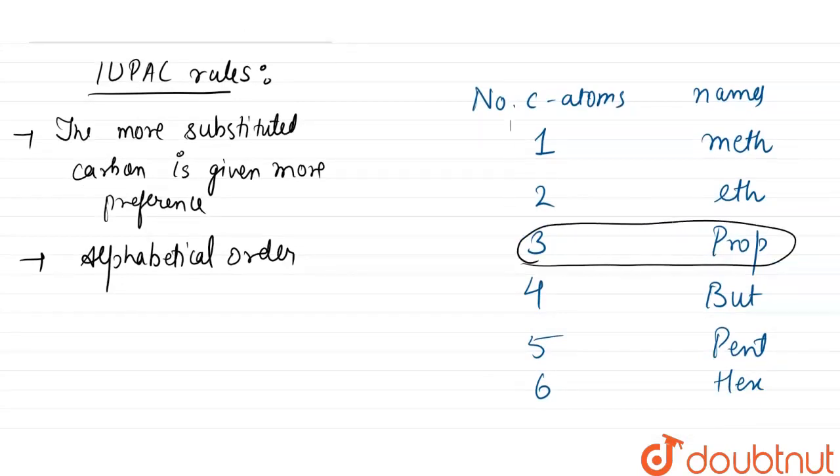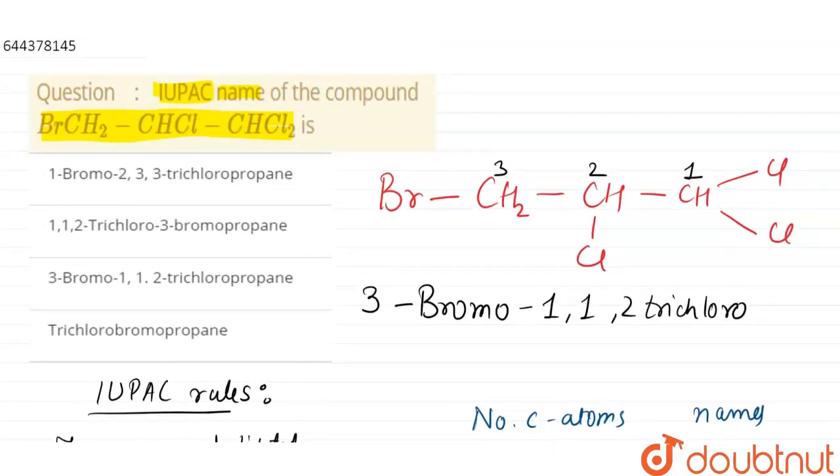As you can see, three carbon atoms are there. For three carbon atoms we use prop. It is an alkane—no unsaturated bond is there—so it will be 3-bromo-1,1,2-trichloropropane, because the suffix for alkane is -ane. This is the IUPAC name. Now let us have a look at the options.